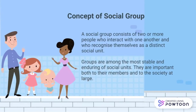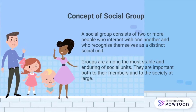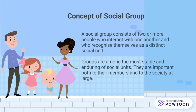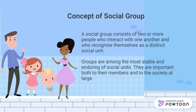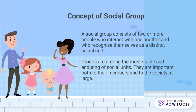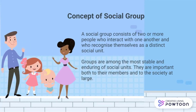Concept of Social Group: A social group consists of two or more people who interact with one another and who recognize themselves as a distinct social unit. This description is simple but has important impacts. Frequent contact leads individuals to share values and opinions, and this similarity allows them to recognize one another. In turn, identification and attachment induce more regular and intense contact. Each group maintains its solidarity and identity vis-à-vis other cultures and social structures. Groups are among the most stable and enduring of social units, important both to their members and to society at large.